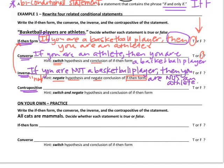Notice that we have the word not — we've negated both the hypothesis and the conclusion. Is that a true statement? If you're not a basketball player, can you still be an athlete? Of course, because basketball is not the only sport. You could be a runner, a golfer, or even a NASCAR driver — and some people do consider NASCAR a sport. So this is false.